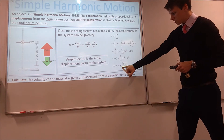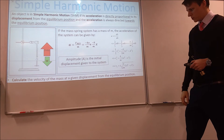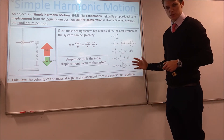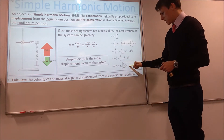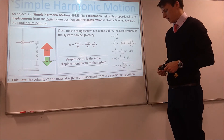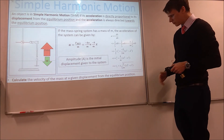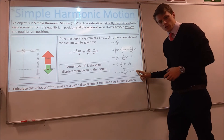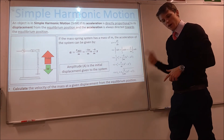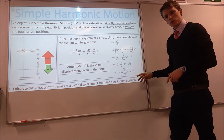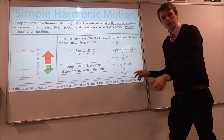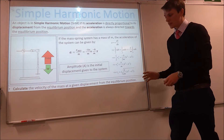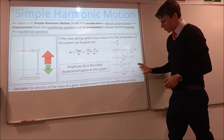The velocity at a given displacement x equals plus or minus the square root of k over m, multiplied by A squared minus x squared, where A is the amplitude. This expression is very close to one in the formula sheets you get, and we'll see in a minute how to adjust it slightly. But first we need to look at SHM from a different perspective.